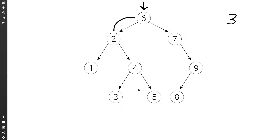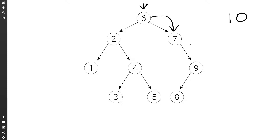What if we were looking for key 10, which in this particular tree does not appear? We will again start at the root. Because 10 is larger than 6, we will move to the right. Again, 10 is larger than 7, we move to the right. And 10 is larger than 9, so we would go to the right. But this time there is no right. So we would return null to indicate that there is no node that has such a key.